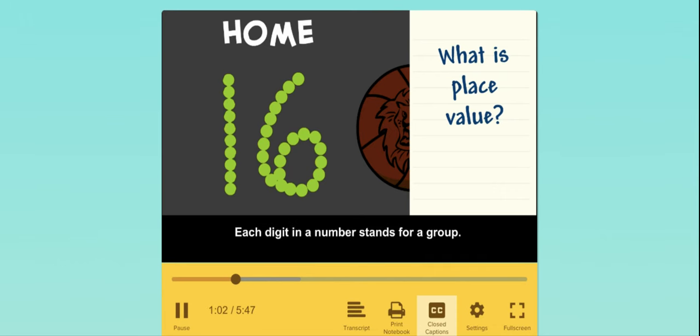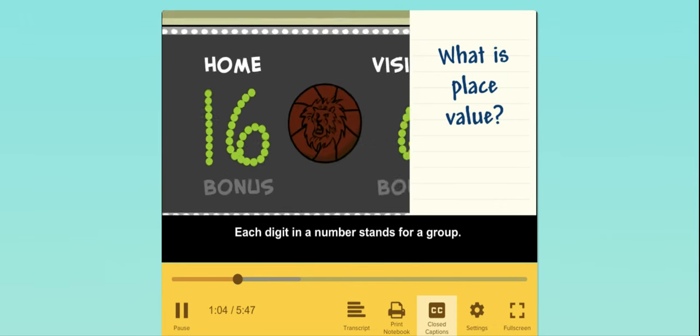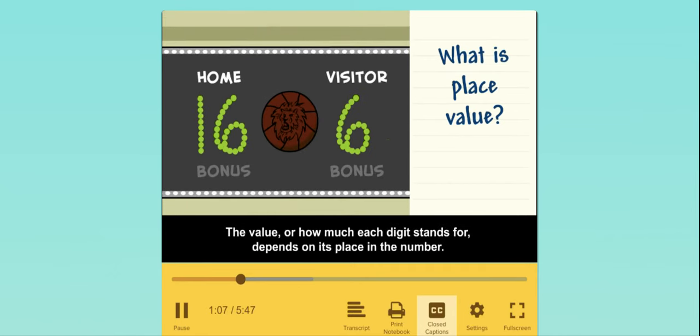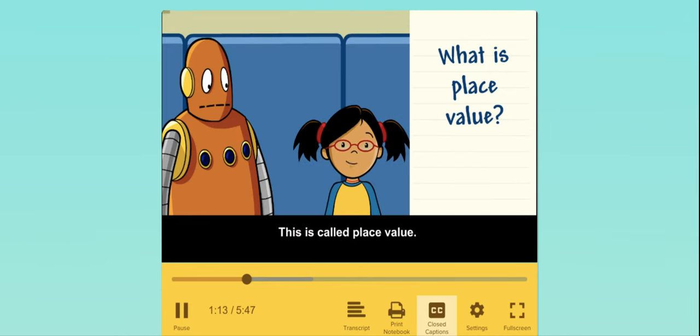Each digit in a number stands for a group. The value, or how much each digit stands for, depends on its place in the number. This is called place value.